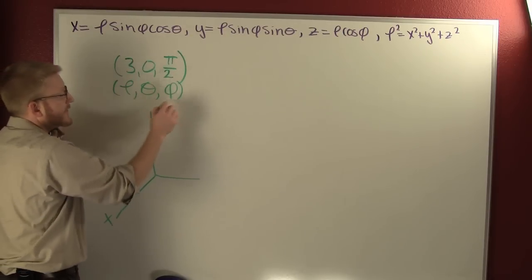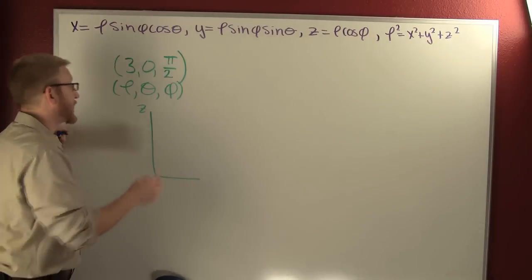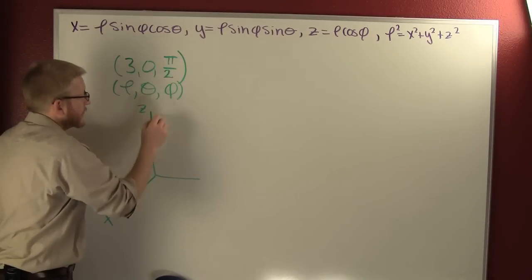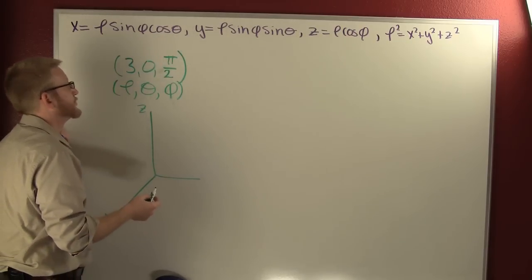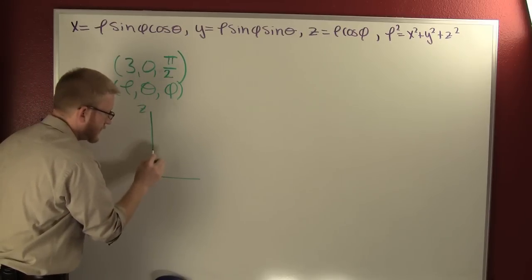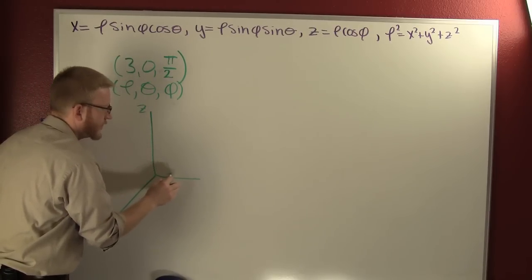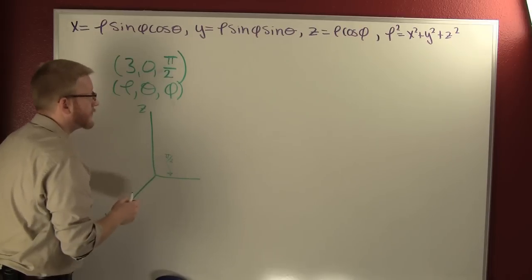That's all the way down to my y-axis. This is pi over 2. Then what do I do? I rotate zero, so my theta is zero.